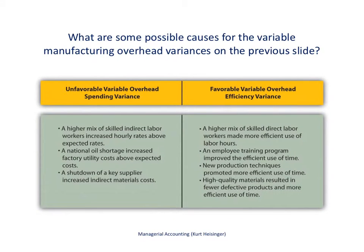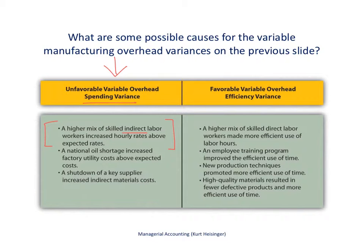This slide describes possible causes for the variable overhead variances. As managerial accountants, we would investigate why we had these variances, assuming they are significant enough. For the unfavorable variable overhead spending variance — why were costs higher than anticipated — one possibility is a higher mix of skilled indirect labor workers, which could increase hourly rates above expected rates and cause actual costs to exceed expectations.